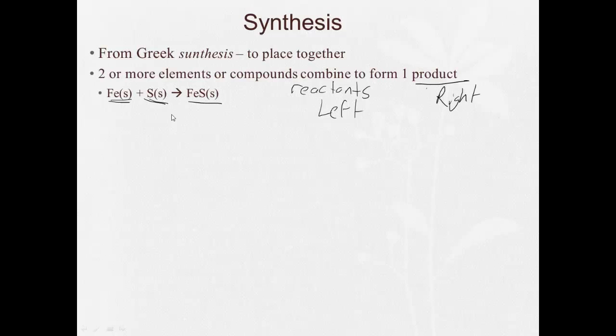So we have two things being put together to form one. Iron and sulfur make iron sulfide. And the general form of a synthesis reaction is X plus Y yields XY. Two things on the left, one on the right. Some books, like even the textbook for the course, will call these a combination reaction, means the same thing, but we're going to use synthesis.